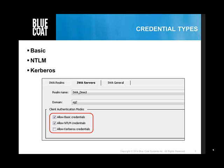BASIC authentication is the simplest technique for enforcing access controls to web resources because it does not require cookies, session identifiers, or login pages. BASIC authentication is merely encoded with BASE64 in transit, but not encrypted or hashed in any way. BASIC authentication is therefore typically used over HTTPS.